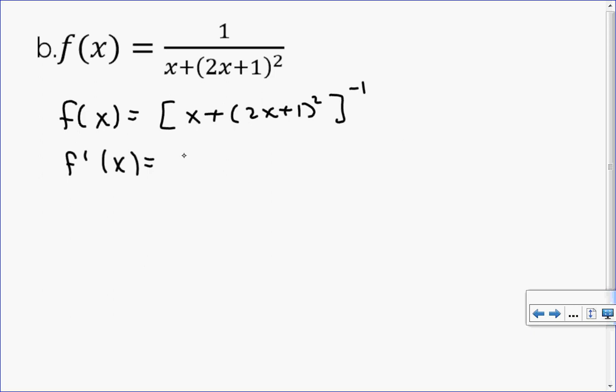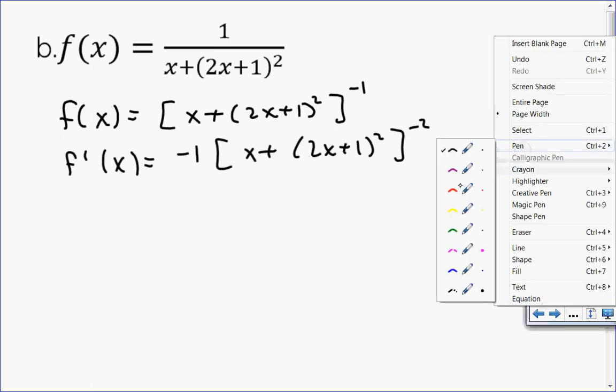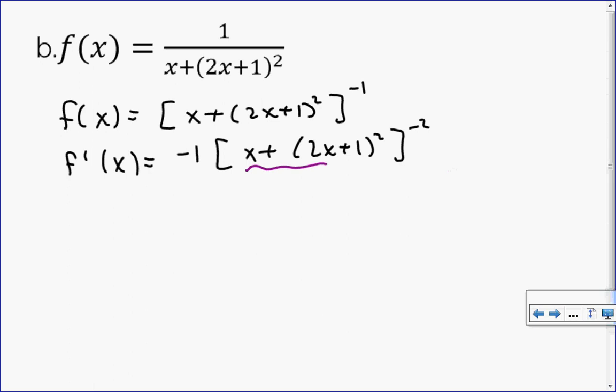So chain rule, I bring the exponent down. Decrease my exponent by 1. So that's the power rule part. The chain rule part comes in that we're doing the derivative of the inside now. So the derivative of x plus 2x plus 1 squared: I bring the 2 down, decrease my exponent by 1, multiply by the derivative of the inside.